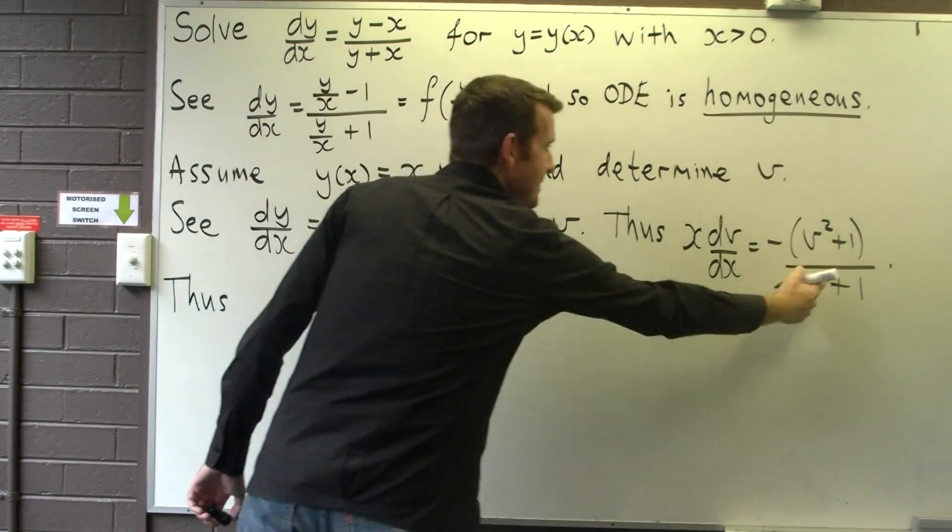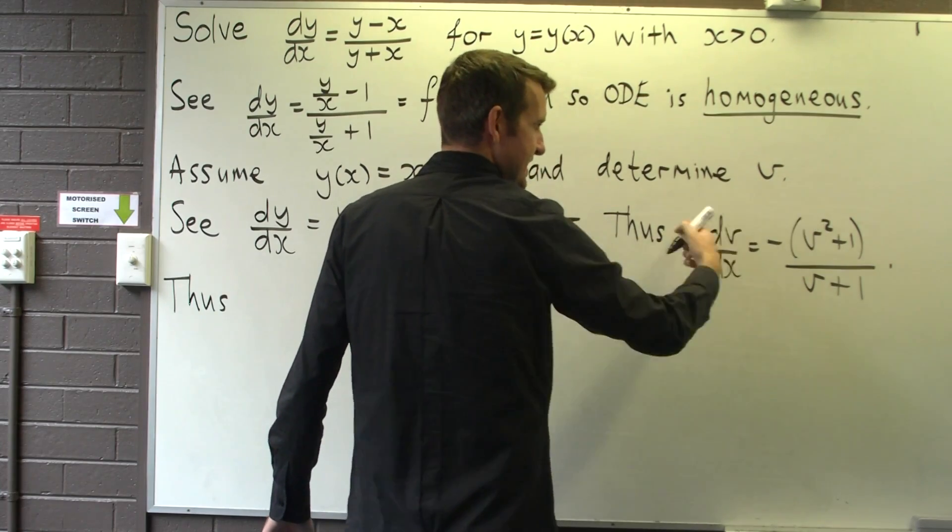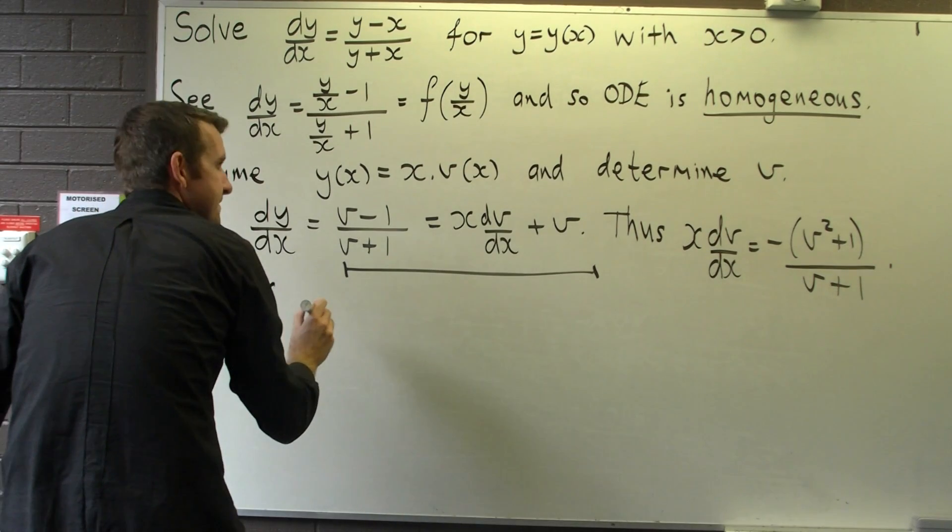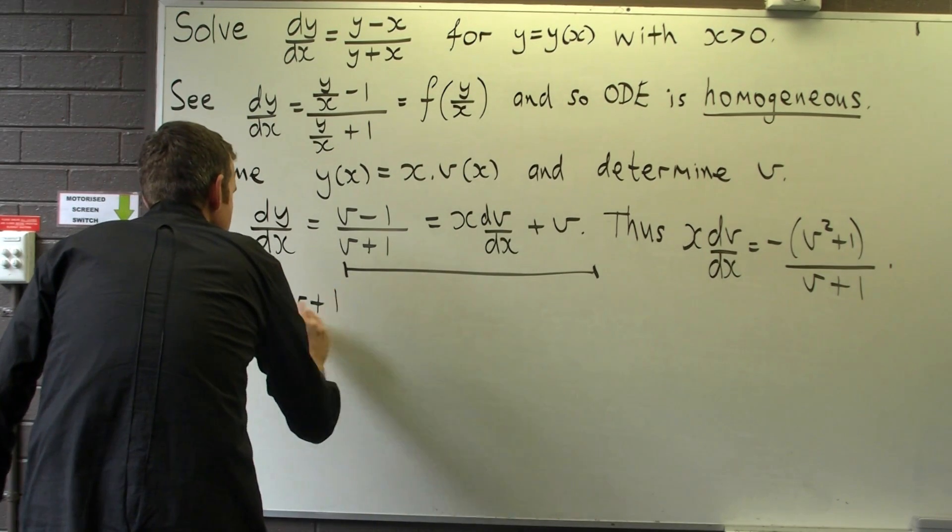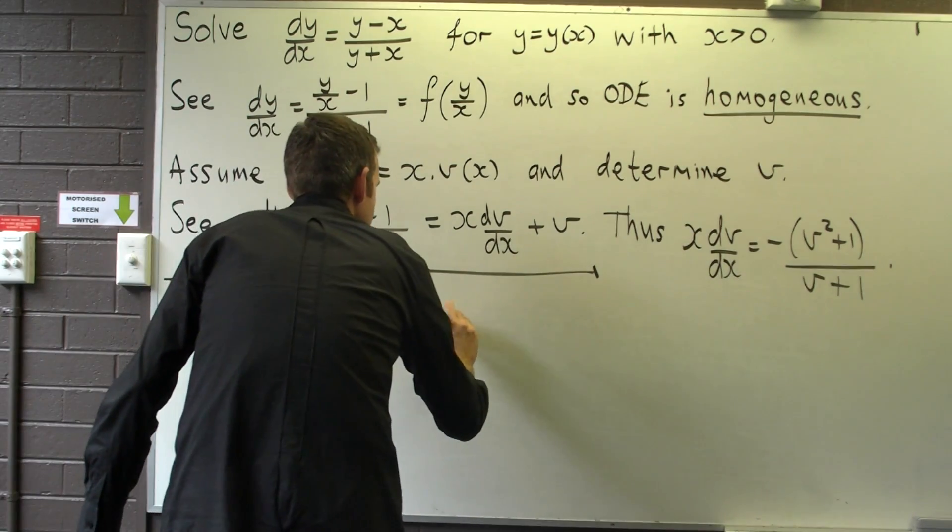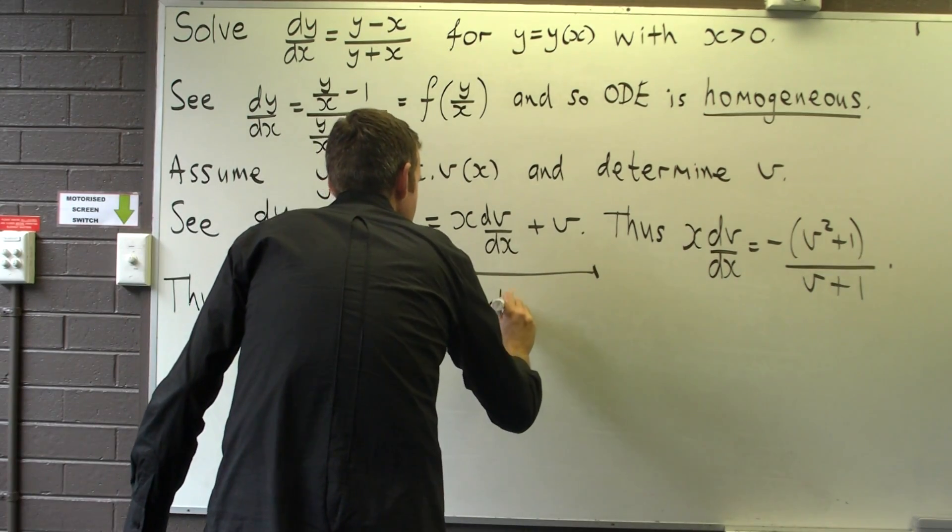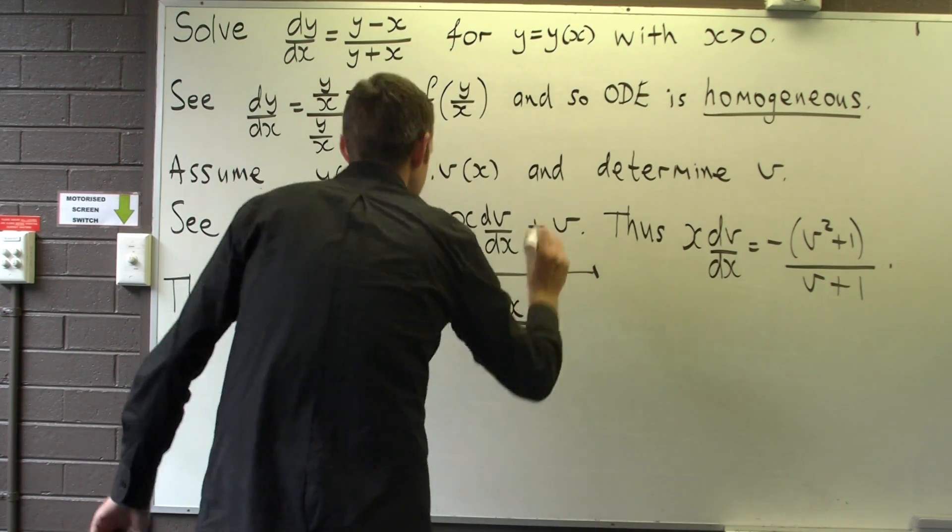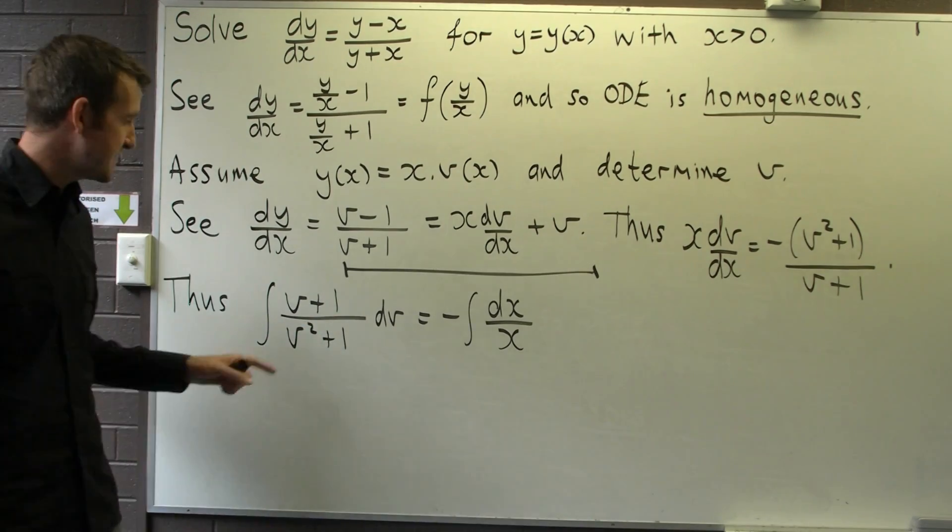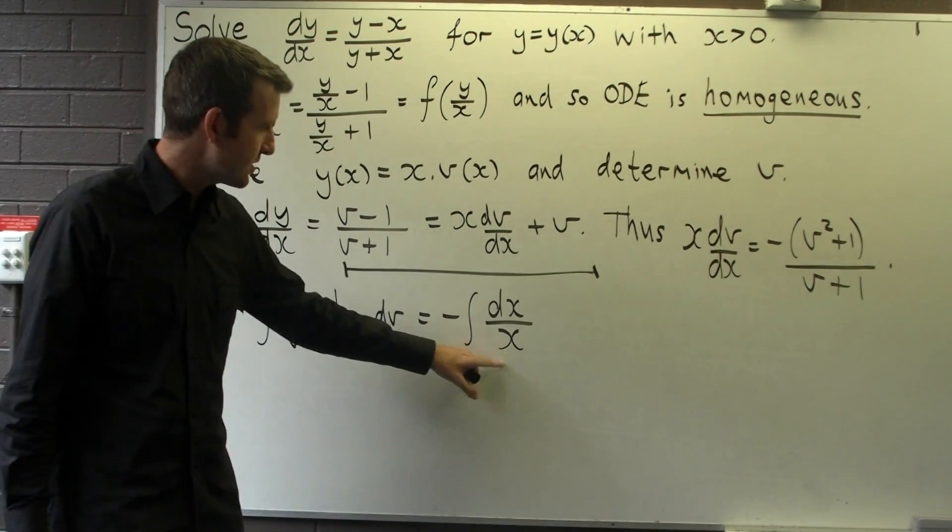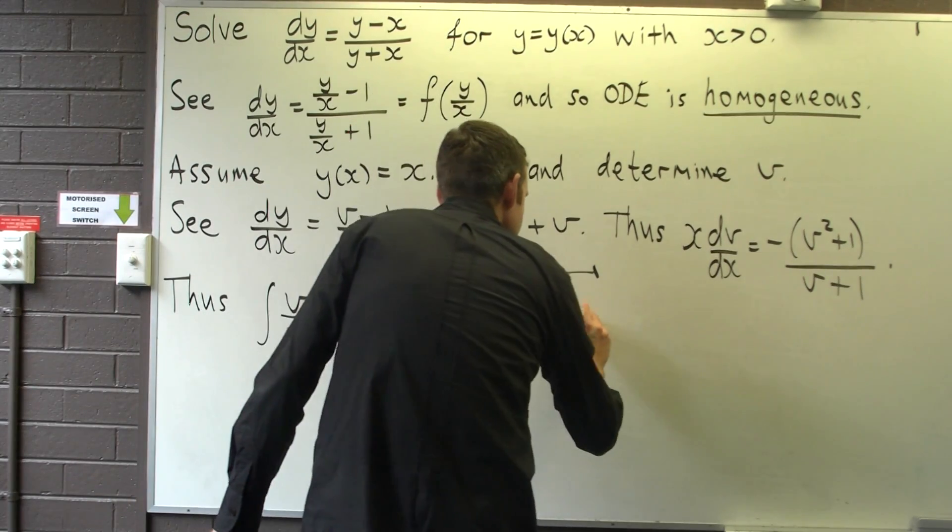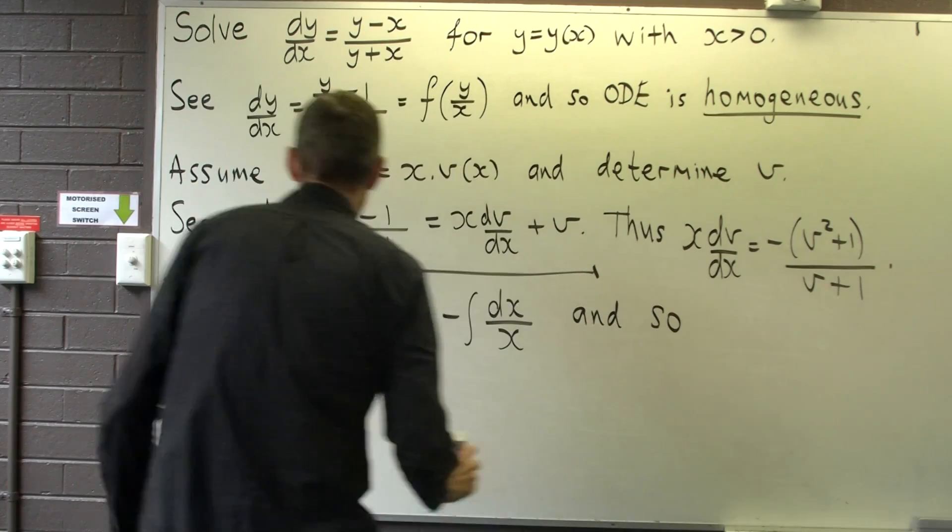So we separate the variables and integrate. So I bring the v plus one up here, the v squared minus one down there, the dx and the x. So I'm going to integrate here, I'm going to break this up into two terms, and integrate with respect to v. And I'm going to integrate here as well.